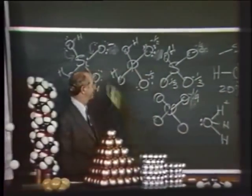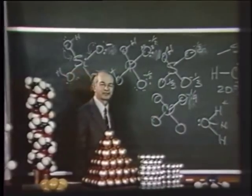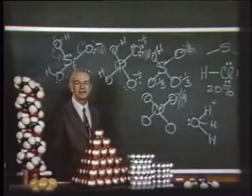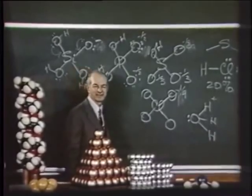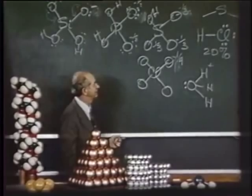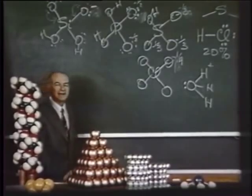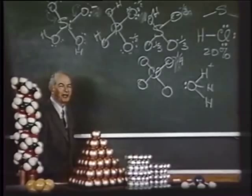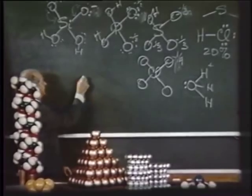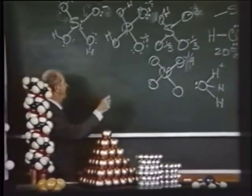This simple consideration applies also to acids of other sorts. Boric acid H3BO3 is a very weak acid because it has only OH groups attached to the central atom. A standard example of a molecule that exceeds the octet is phosphorus pentachloride, PCl5.